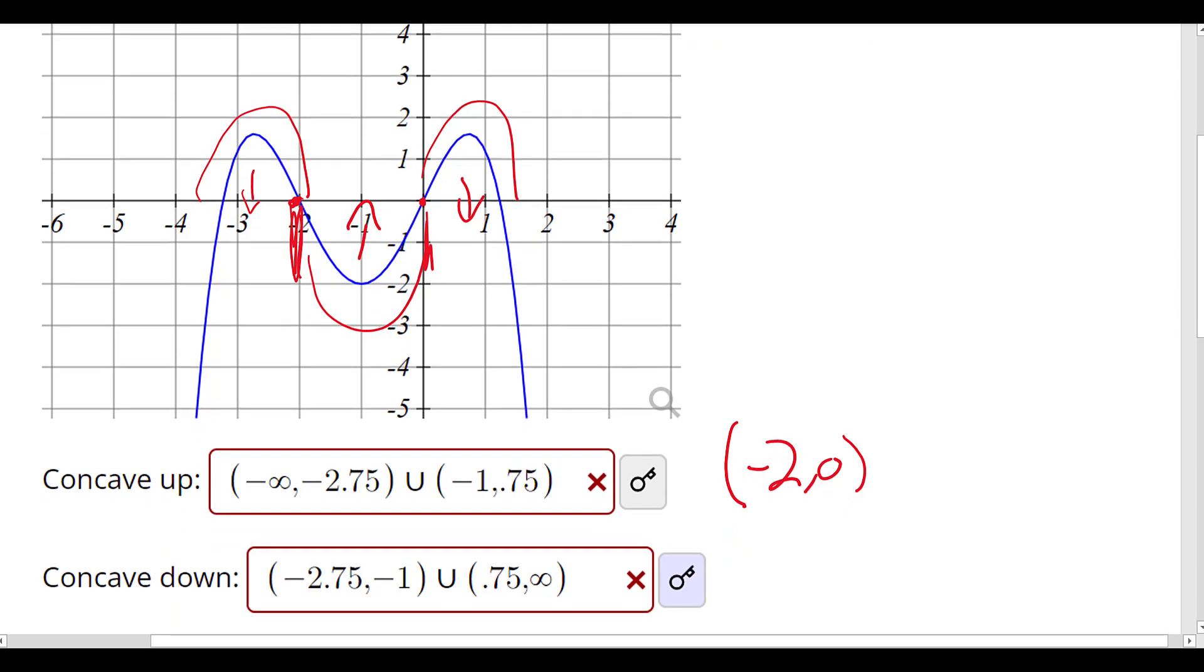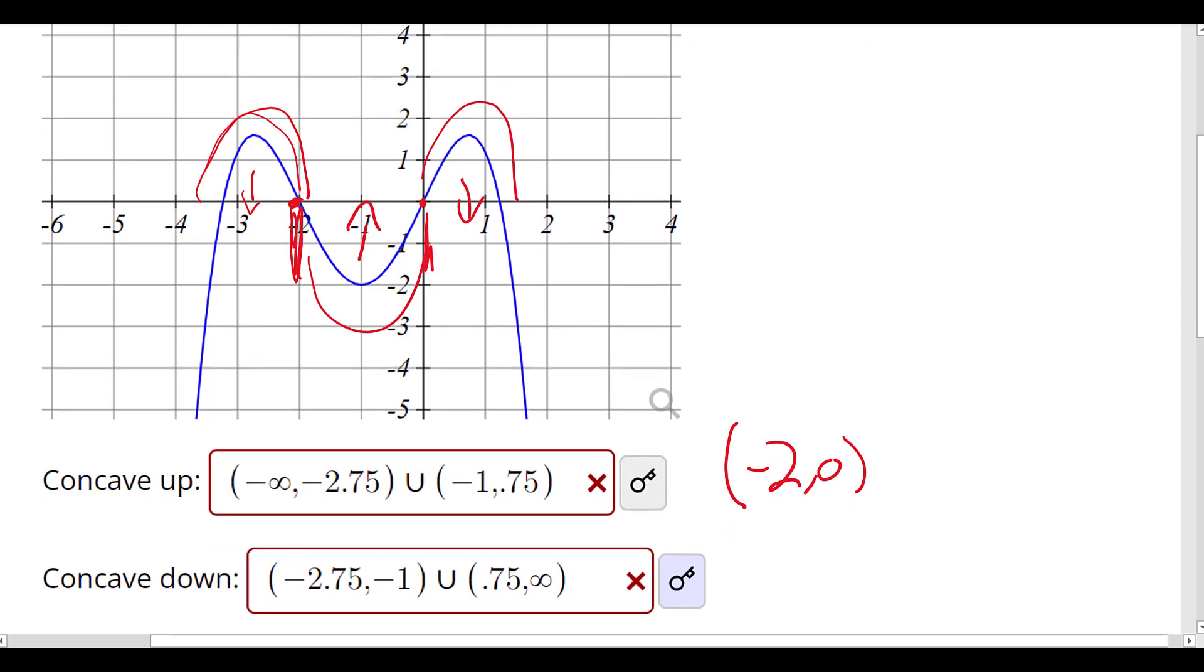Then we look for concave down, and we're looking at these regions here. So we're looking at negative infinity up to negative 2, union—and then, that's concave down, so it's facing downward. At negative 2 it stops and picks up again, so down again at 0, so 0 to infinity.